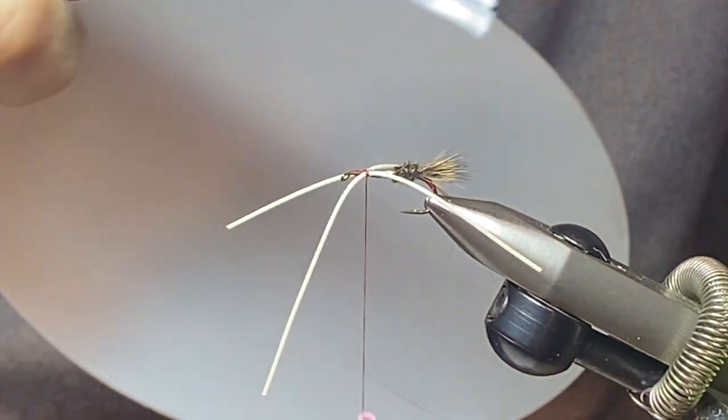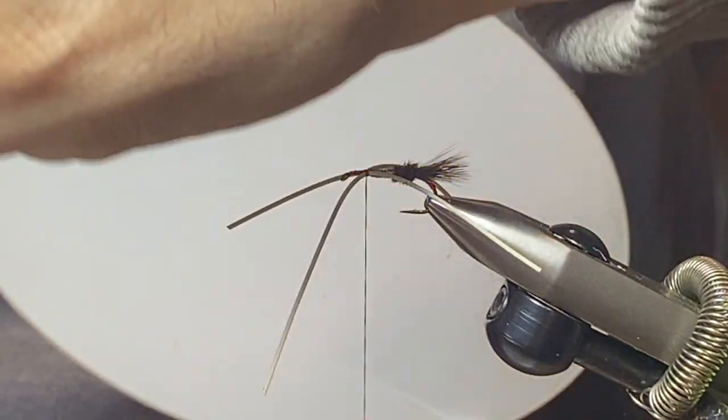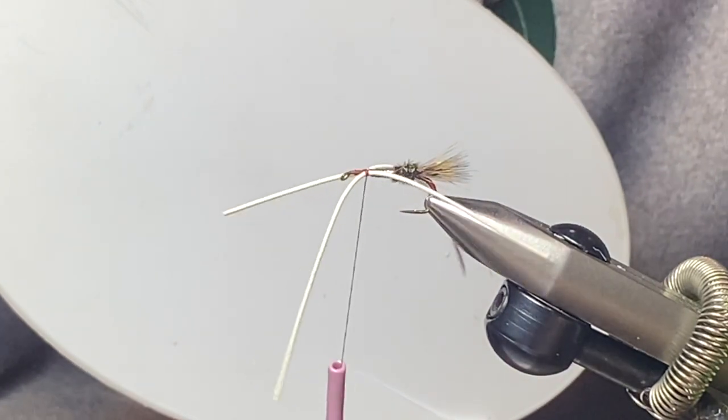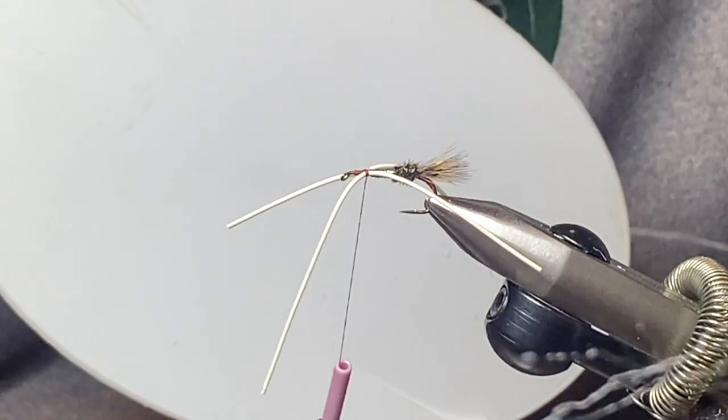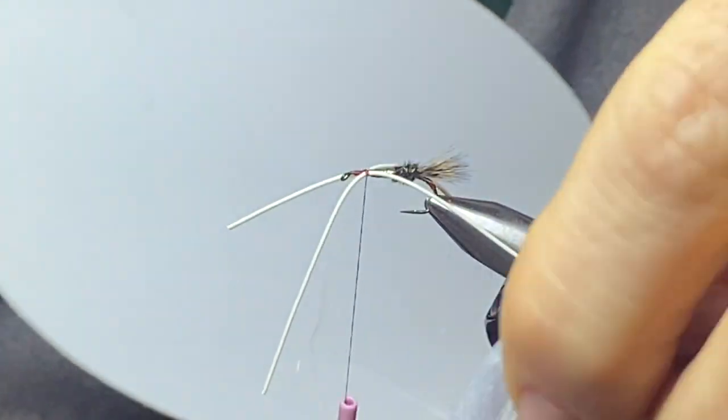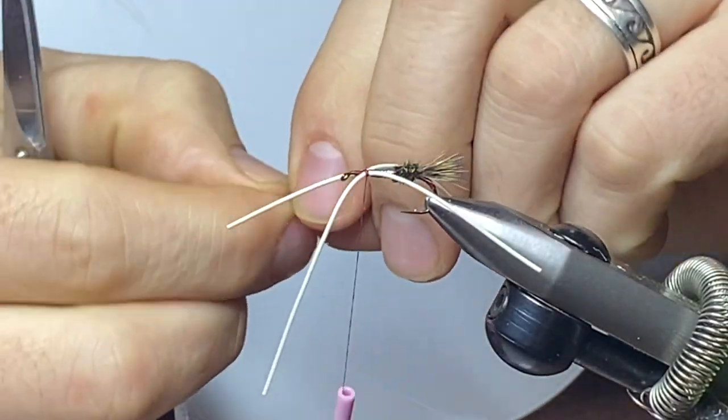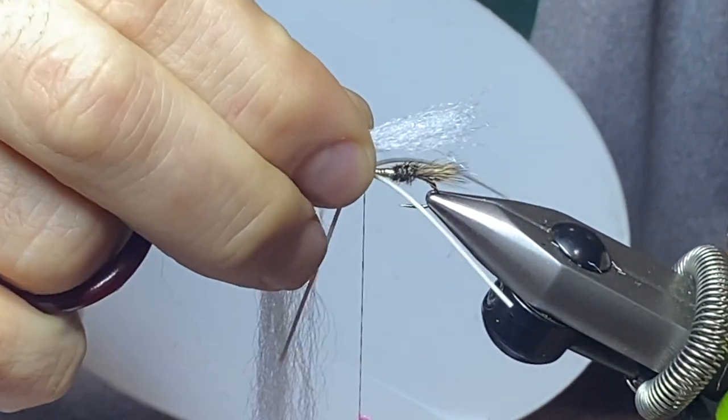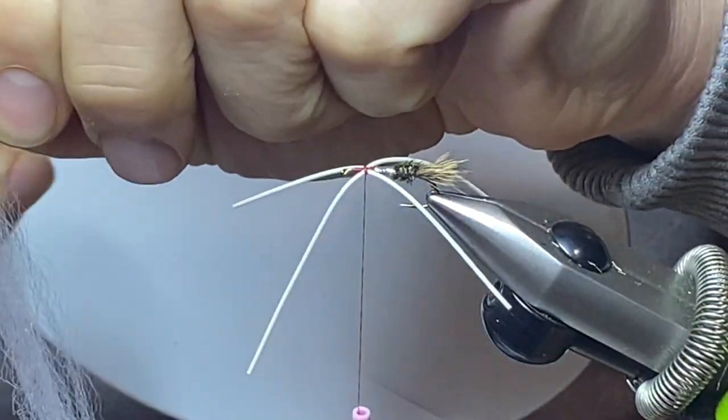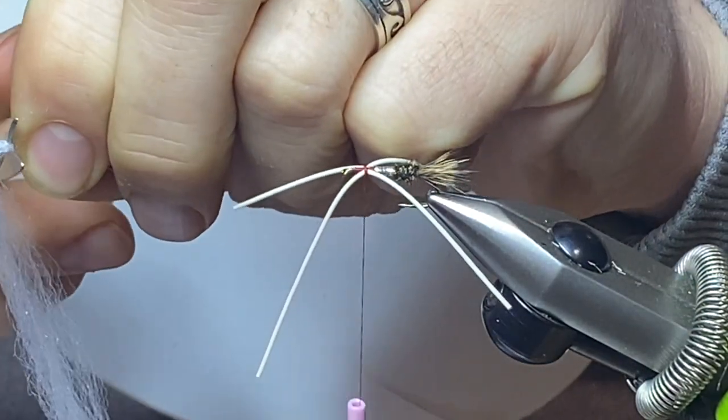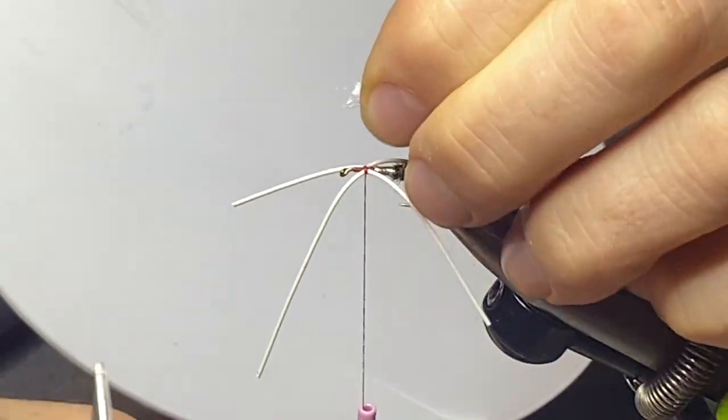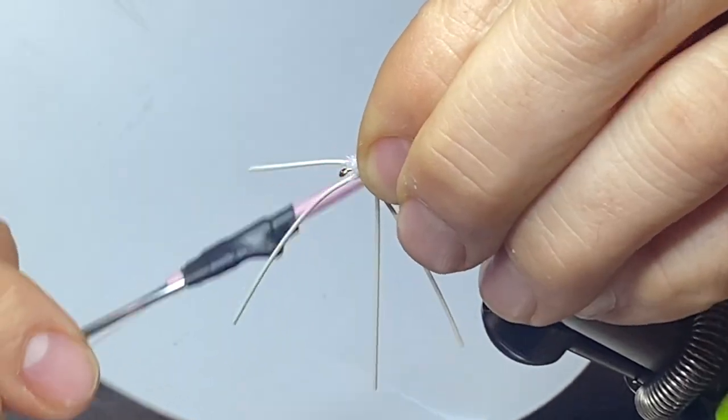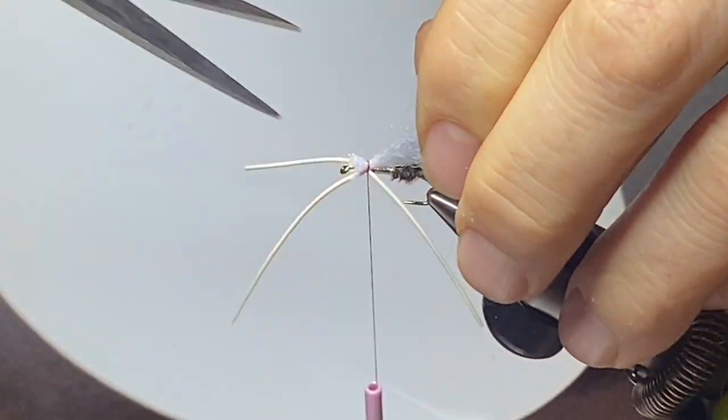So I'm going to use some trigger point fiber for the wing. You can also use hi-vis or parachute post is good, but a nice chunk of it. It's always nice to just hold up. So this is, remember I said, a double wing. That's your underwing, and this becomes your overwing. So measured, looks like it's gonna be a little bit long, but I'm gonna tie it right in around those wings.